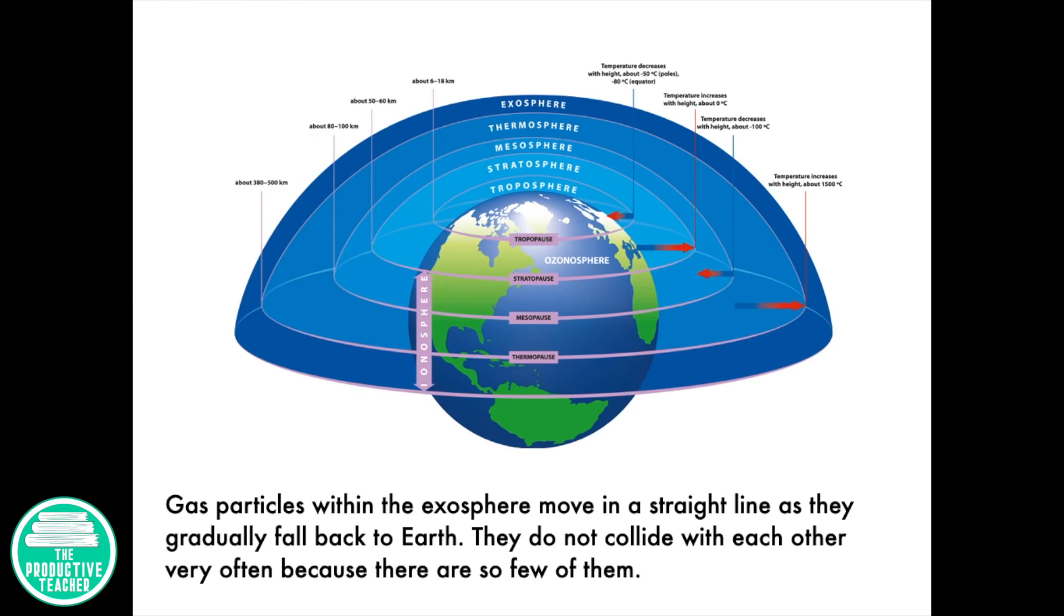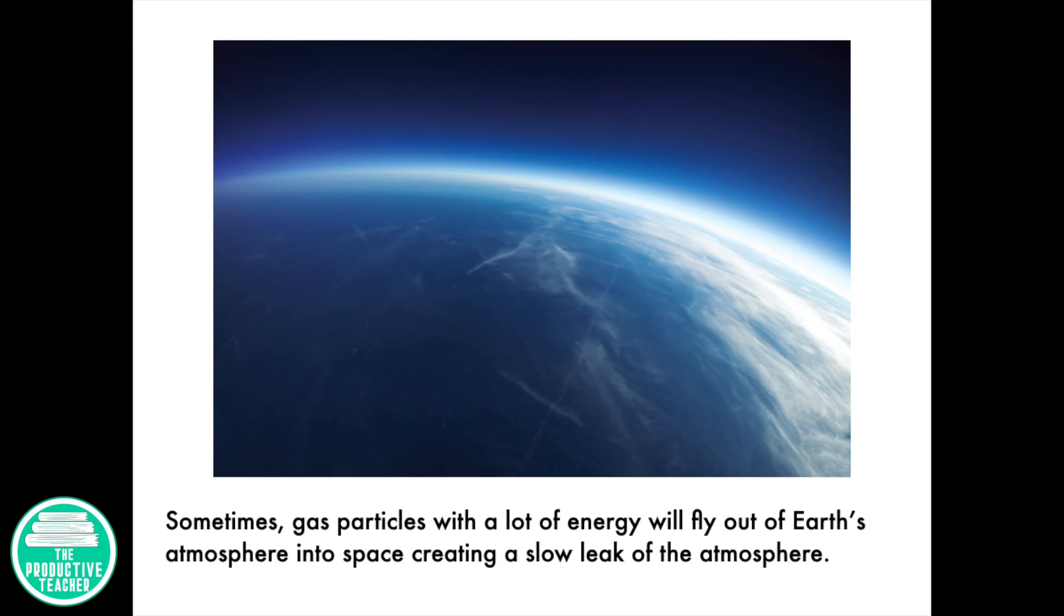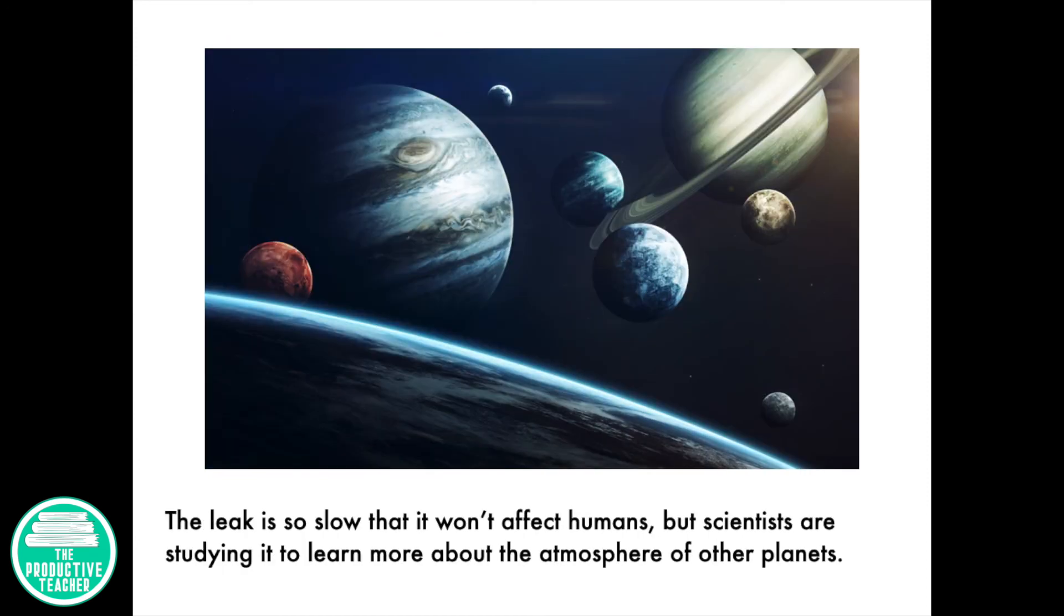Gas particles within the exosphere move in a straight line as they gradually fall back to Earth. They do not collide with each other very often because there are so few of them. Sometimes gas particles with a lot of energy will fly out of Earth's atmosphere into space, creating a slow leak in the atmosphere. The leak is so slow that it won't affect humans, but scientists are studying it to learn more about the atmospheres of other planets.